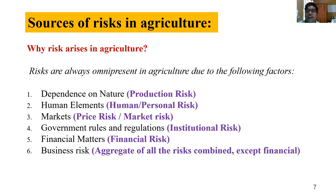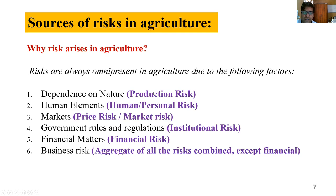Financial risk exists because farmers still don't have sufficient capital to run their business — whether working capital or fixed capital — and are dependent on loans for daily agricultural business. The bank may give or may not give; interest rates may change; the bank may ask for collateral, mortgage, or pledge. Business risk is the aggregate of all risks — production, human, price, and institutional — except financial risk. It is the aggregate effect excluding financial risk.